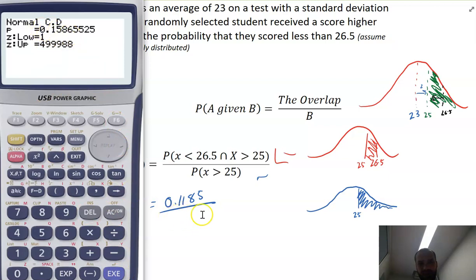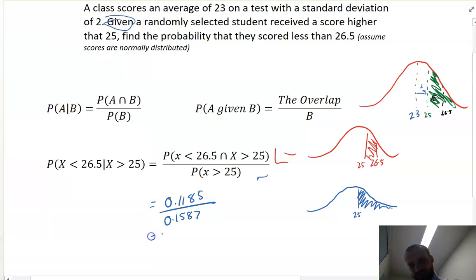Now, important to note, this probability down the bottom is always going to be bigger than the probability up the top. So if it's not, you've done something wrong. So now that I've got one divided by the other, it's just a matter of typing this into my calculator and seeing what pops out. So it's going to be 0.1185 divided by 0.1587. And the probability is 0.7467.